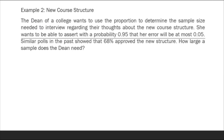Example two — New Course Structure: The dean of a college wants to use the proportion to determine the sample size needed to interview students regarding their thoughts about a new course structure. She wants to assert with a probability of 0.95 that her error will be at most 0.05. Similar polls in the past showed that 68% approved the new structure. How large a sample does the dean need?